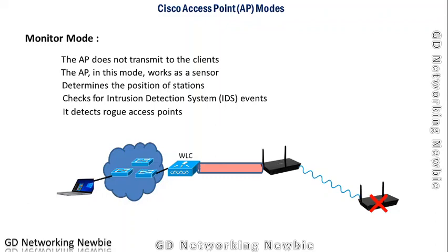In monitor mode, the access point does not transmit to clients — it acts purely as a sensor. It determines the position of stations, checks for intrusion detection system events, and devotes more time to these monitoring activities. It also detects rogue access points on the network.